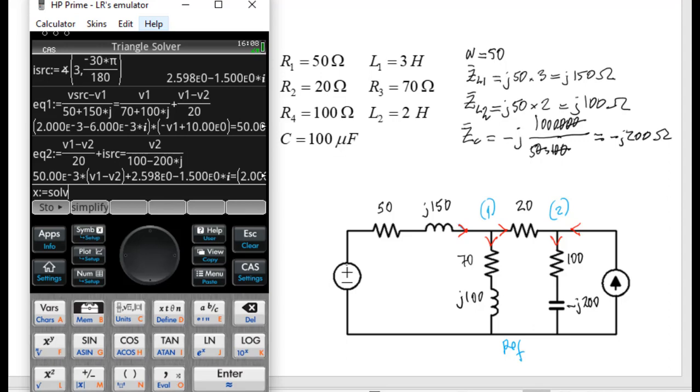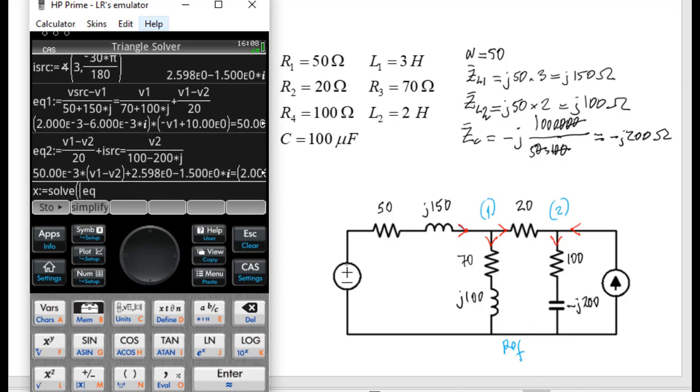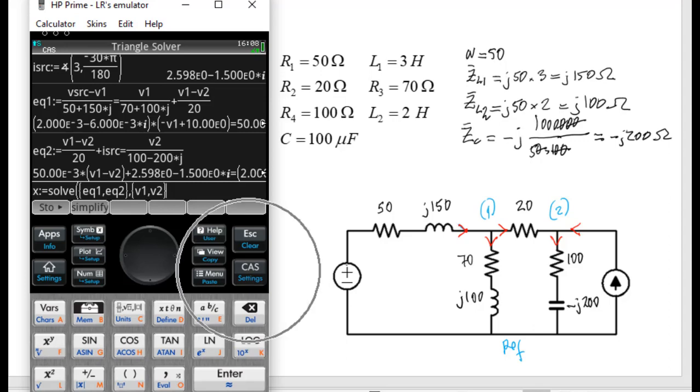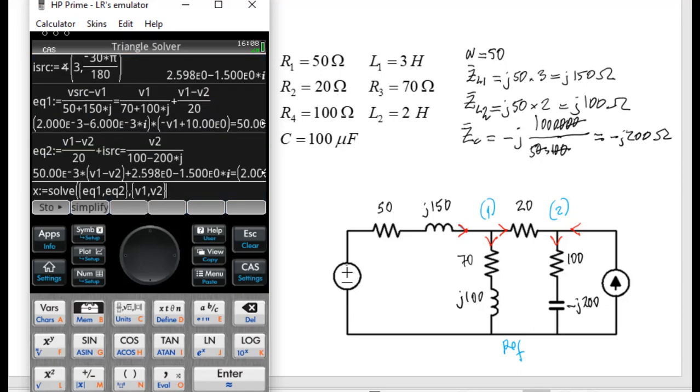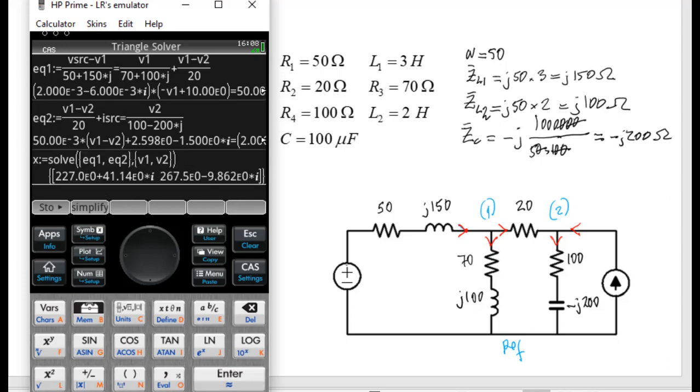The solution: solve the system of equations X1 and X2 and give me the values for V1 and V2, which of course will be complex numbers. Before we ask that, let me go to the setting of CAS and make sure that I have activated the possibility of giving me a complex number response. Use the imaginary unit. Go back to CAS. Close parentheses. Enter. Those are V1 and V2, two complex numbers.